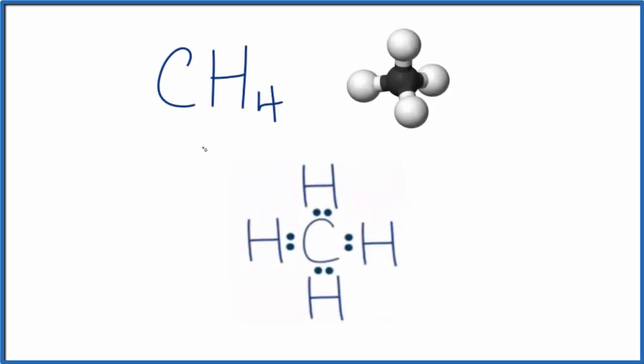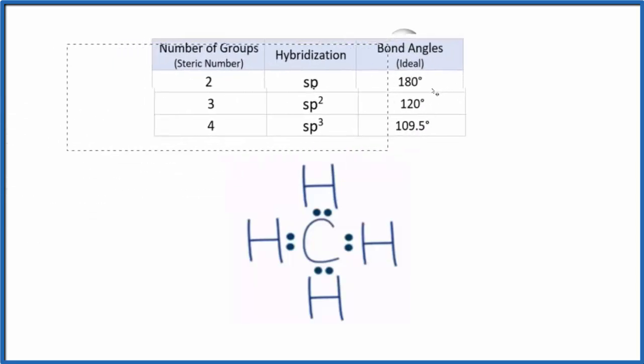In this video we'll look at the hybridization for the carbon in CH4, methane. We have a Lewis structure here, and if you need help drawing the Lewis structure for methane, there's a link in the description. The easy way to do this is to look at this table.